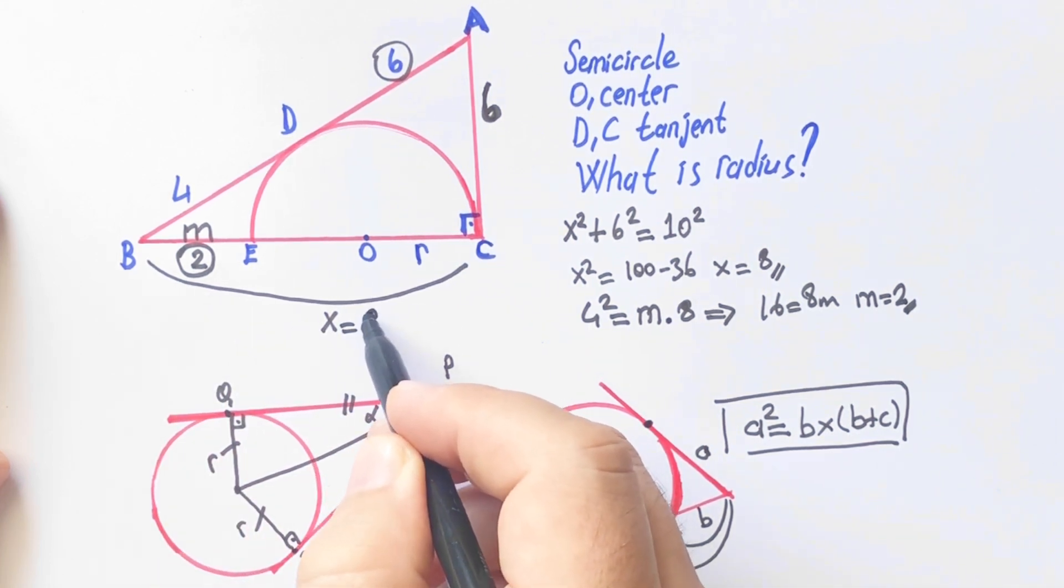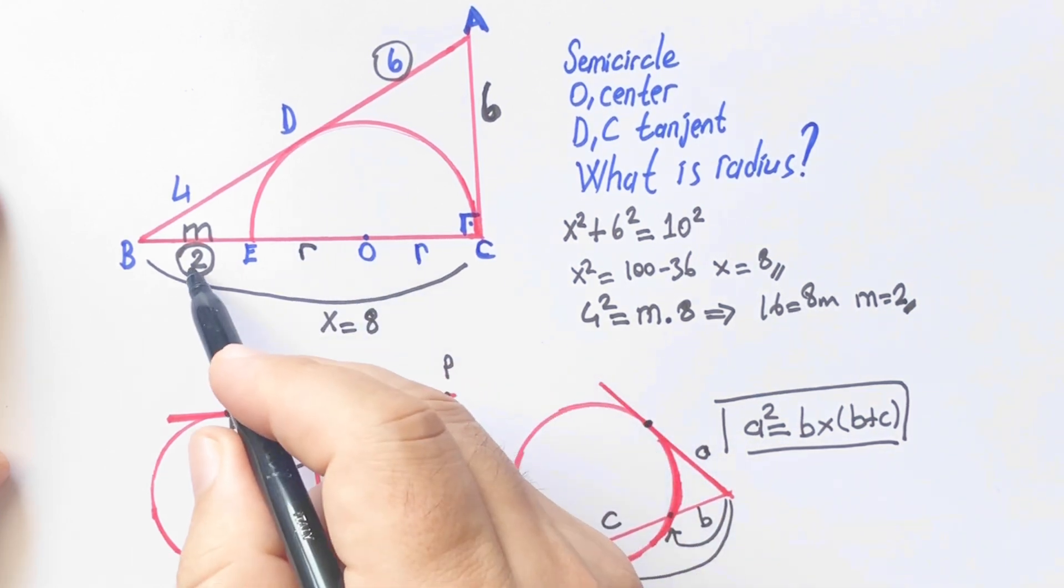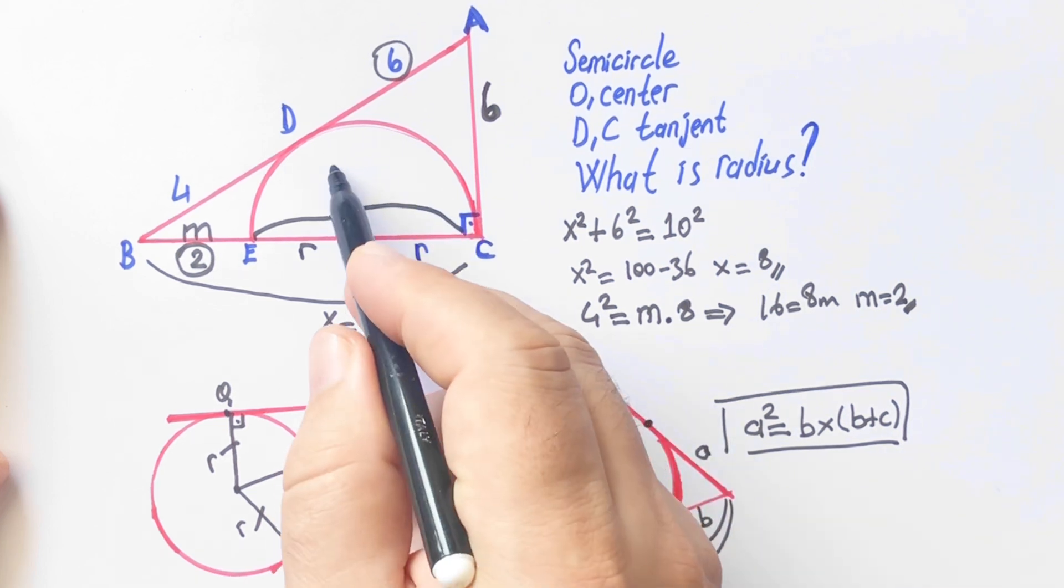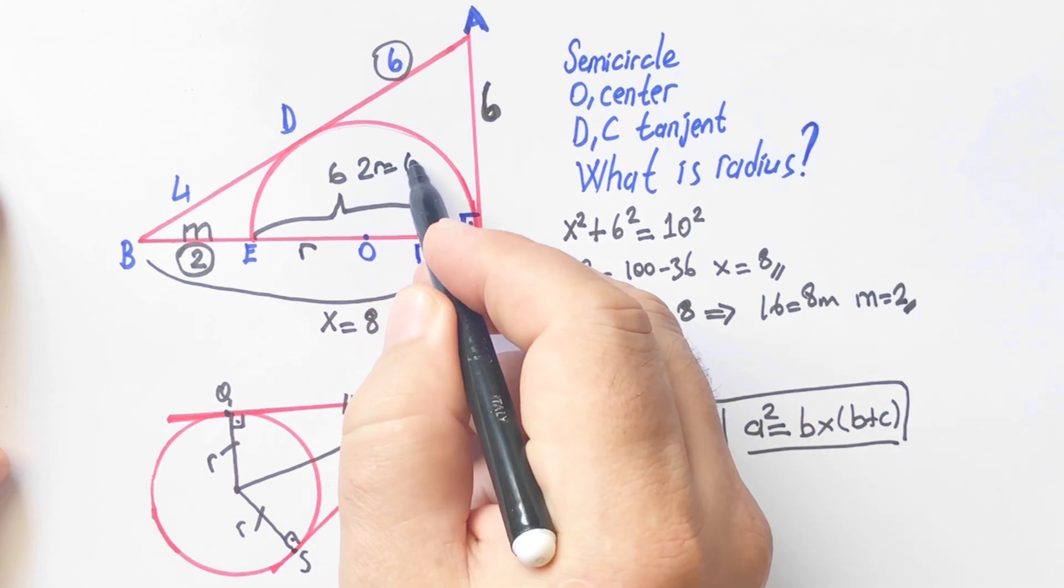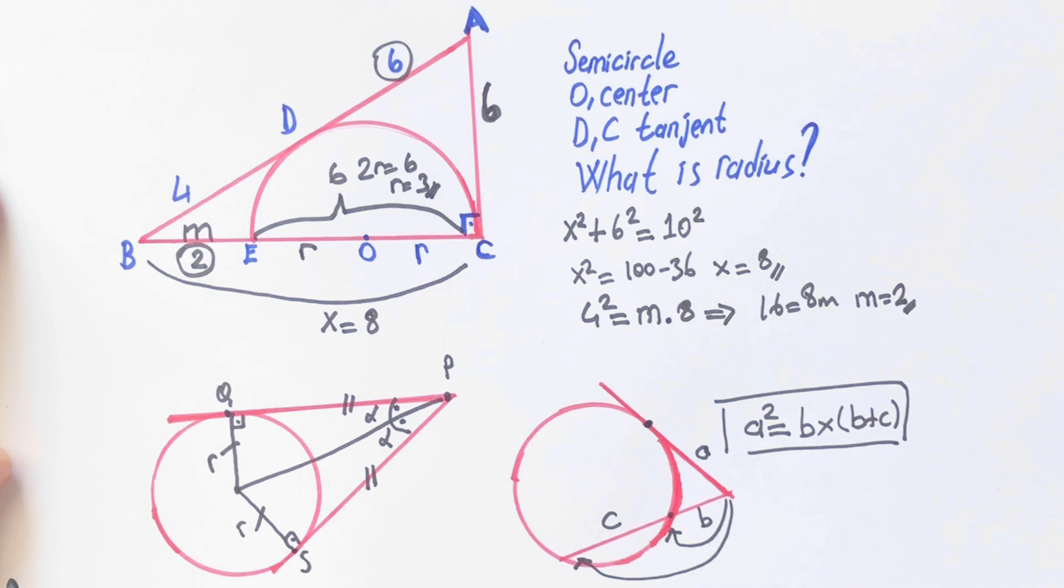8 minus 2, so 2R is equal to 6, and we find radius equals 3 units. Thanks for watching.